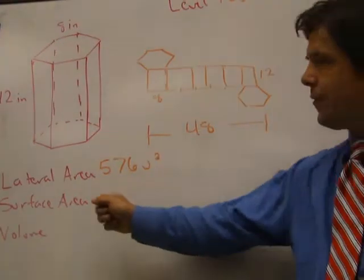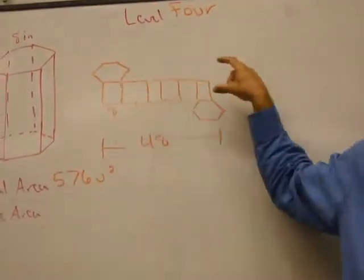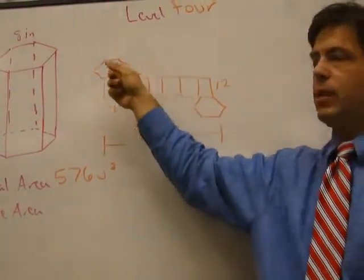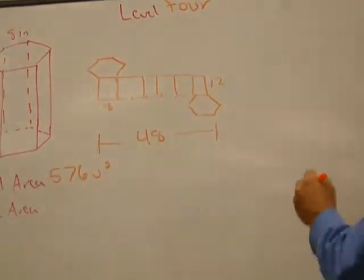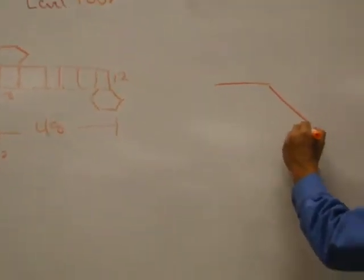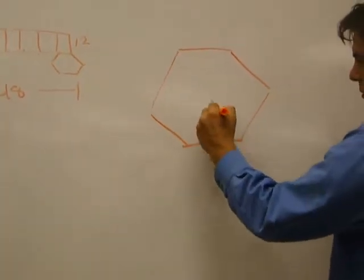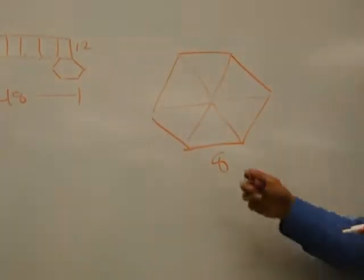Okay. Now, guys, for the surface area, the surface area, we're taking this rectangle, which equals the lateral area, and we're adding the two bases. Now, what shape are the bases? Hexagons. Hexagons. So, let's investigate what the hexagon actually looks like. How long will each side of the hexagon be? Eight. Eight. Does everybody remember that this is really six equilateral triangles? Yes. We do remember.